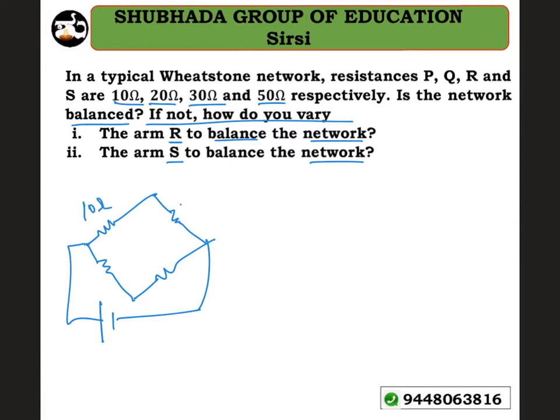This is P and Q. Let me label them properly - this is P, this is Q, this is R, and this is S. P is 10Ω, Q is 20Ω, R is 30Ω, and S is 50Ω.